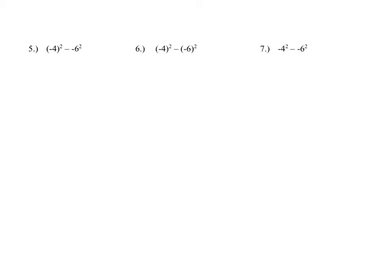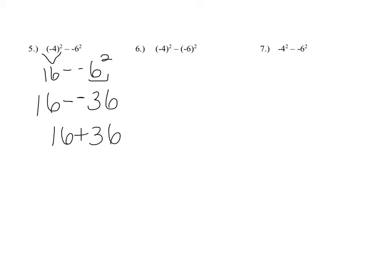Now this can start to get super confusing when you're adding and subtracting things. All three of these problems have the same numbers and look like you're doing negative 4 squared minus negative 6 squared, but you're not. In the first one, negative 4 is inside parentheses, so that means negative 4 squared — negative 4 times negative 4 is positive 16. The next part says minus minus 6 squared. The little 2 is attached to the 6 first, not the parentheses, so I have to do 6 squared first — that's positive 36. It's a double negative: 16 minus negative 36, which is essentially 16 plus 36, giving us 52.